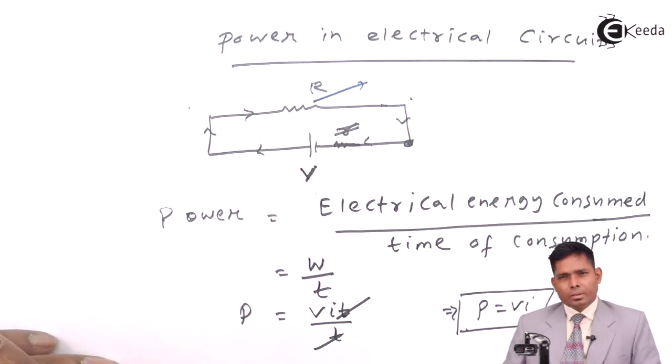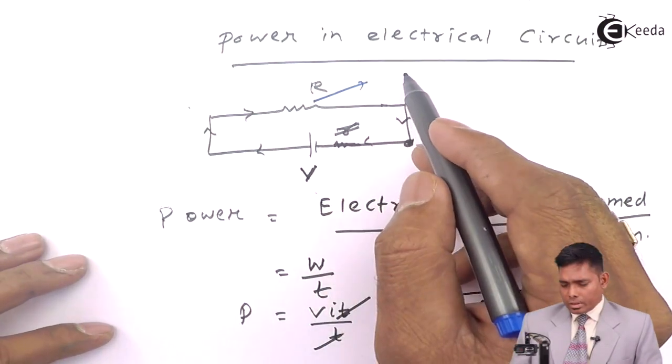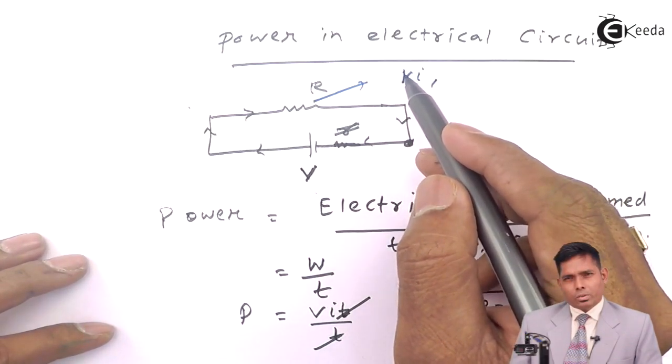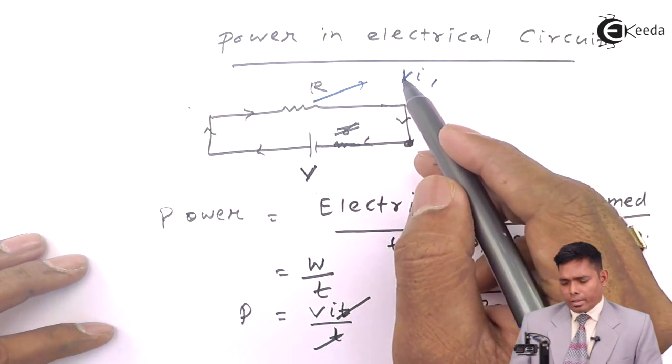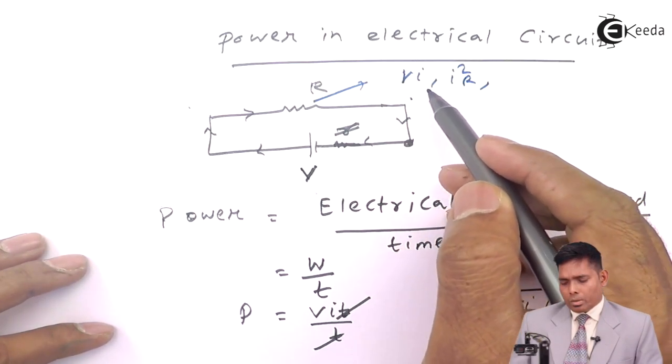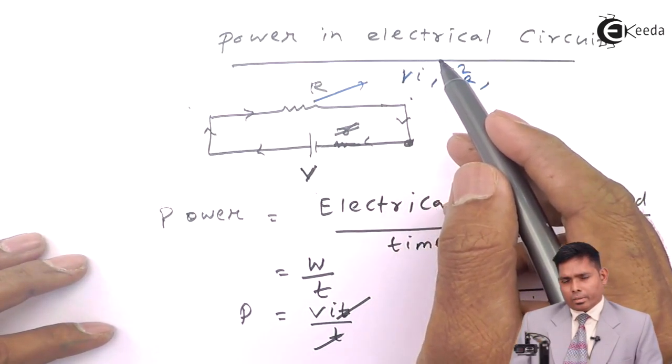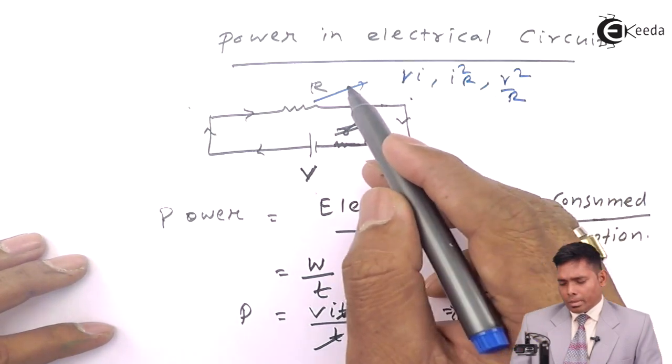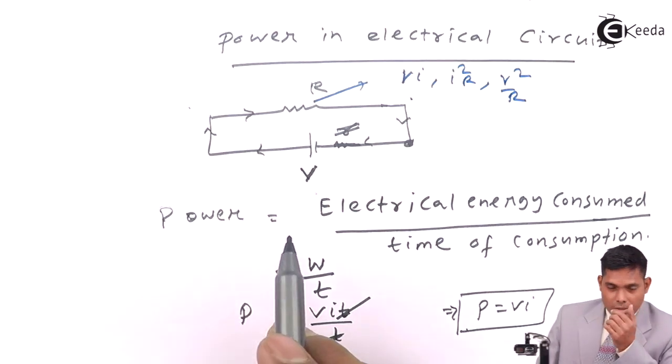The power across the resistor is V into I, or because V equals I into R, so I into R into I gives I squared R. Because V equals IR, I equals V by R, so V by R times V by R gives V squared by R. So these three formulas can be used. This is the power consumed in case of a resistive element.